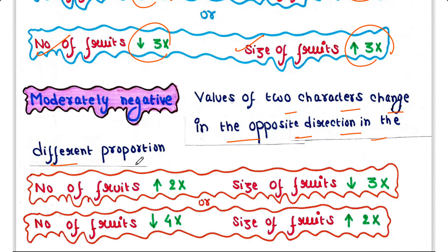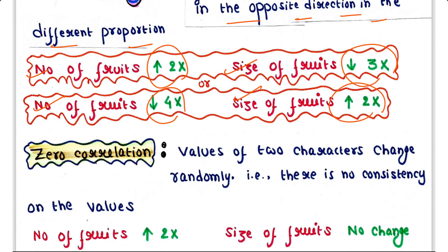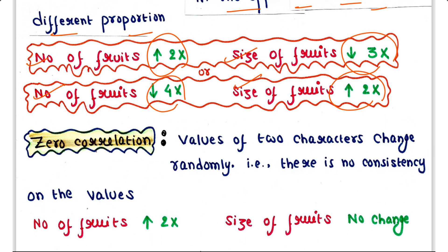Moderately negative correlation is when the values of two characters change in the opposite direction in different proportions. In our case, number of fruits is increased two times and size of fruits is decreased three times, or else number of fruits is decreased four times and size of fruits is increased two times.